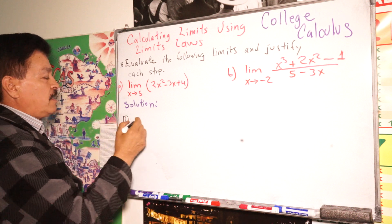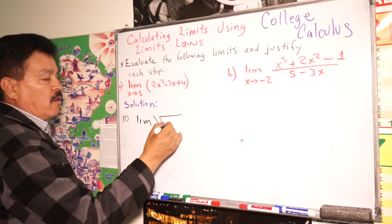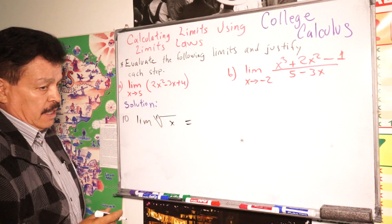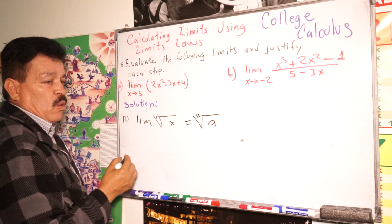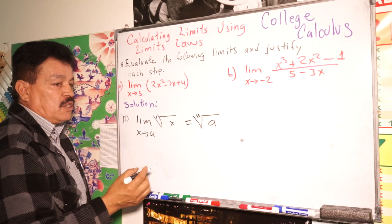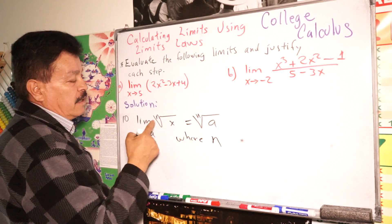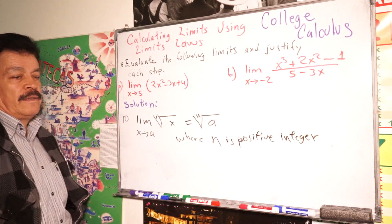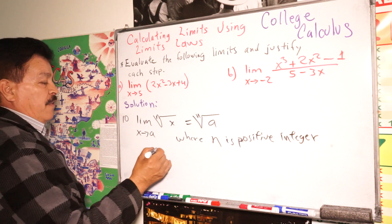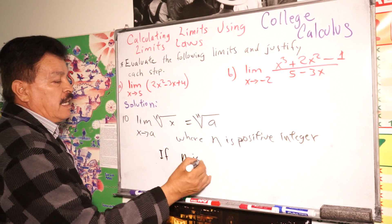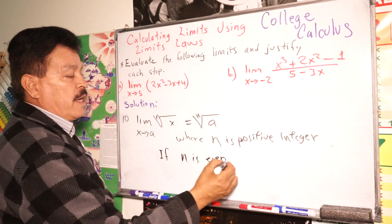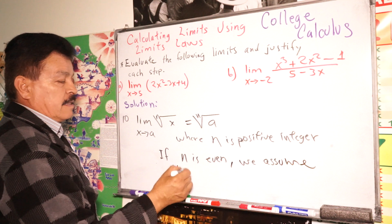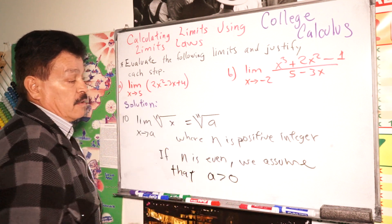Limit law number ten involves radicals: the limit of the n-th root of x equals the n-th root of a, as x approaches a. Here n is a positive integer. Also, if n is an even number, we assume that a is greater than zero.